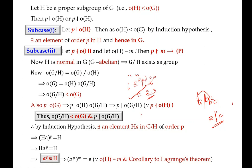So the order of G/H is strictly less than the order of G and P divides |G/H|. By the induction hypothesis, we can conclude that there exists an element — a right coset HA in G/H — of order P. That means (HA)^P equals the identity element in G/H, which is H.